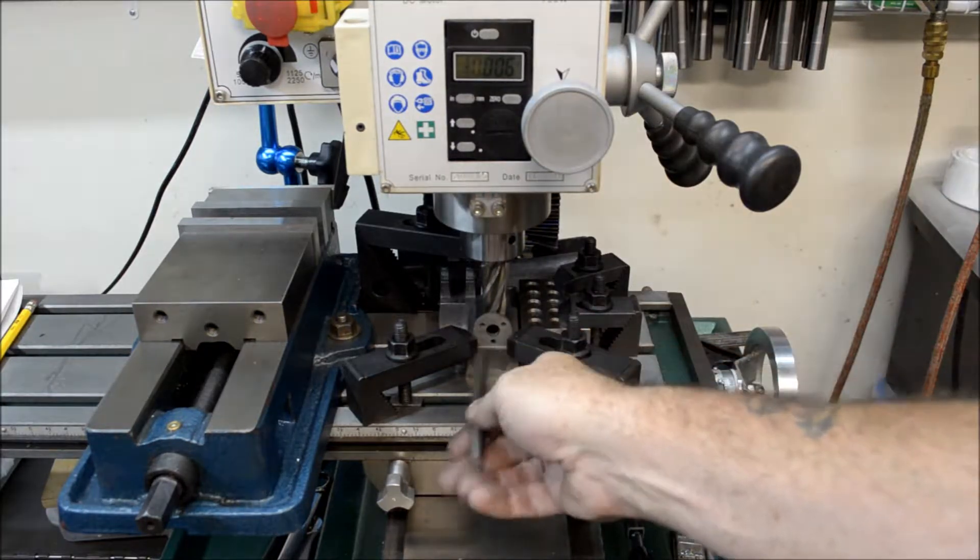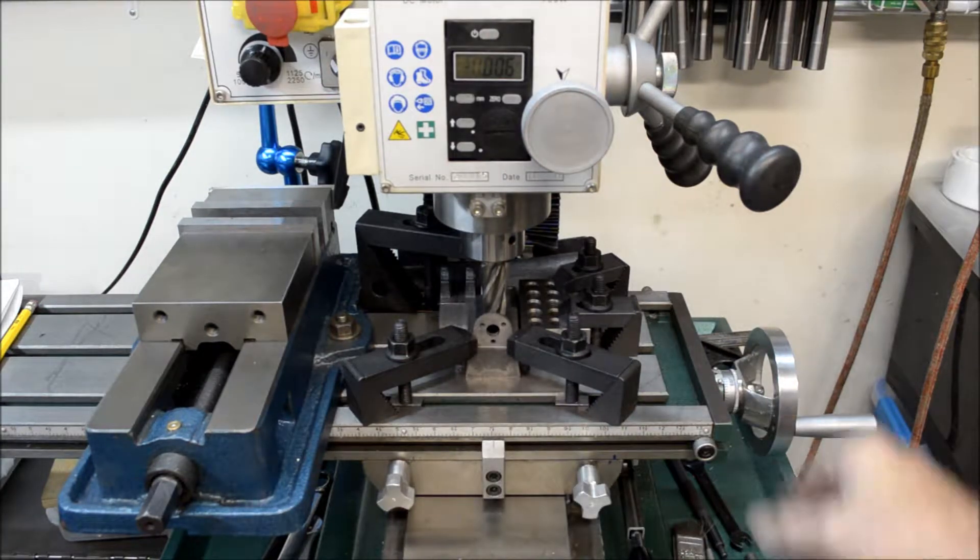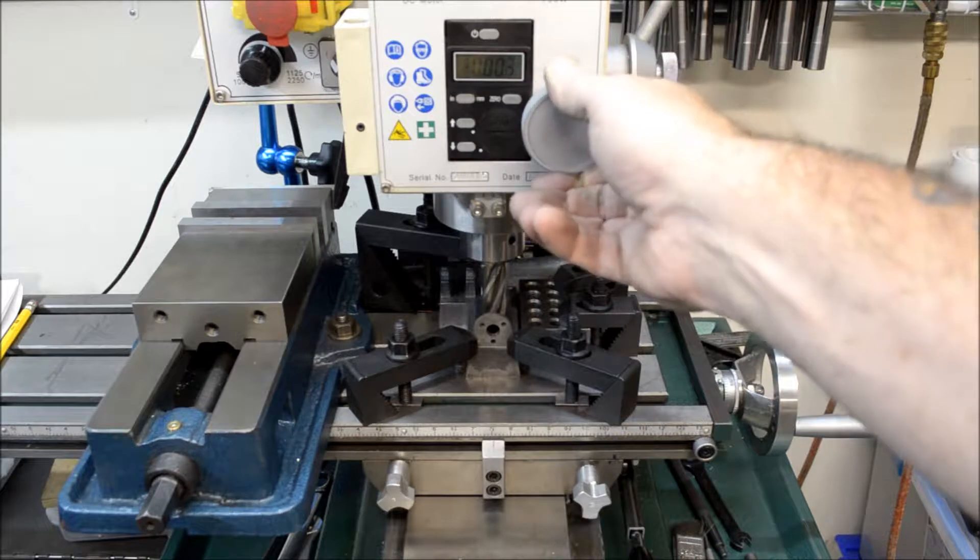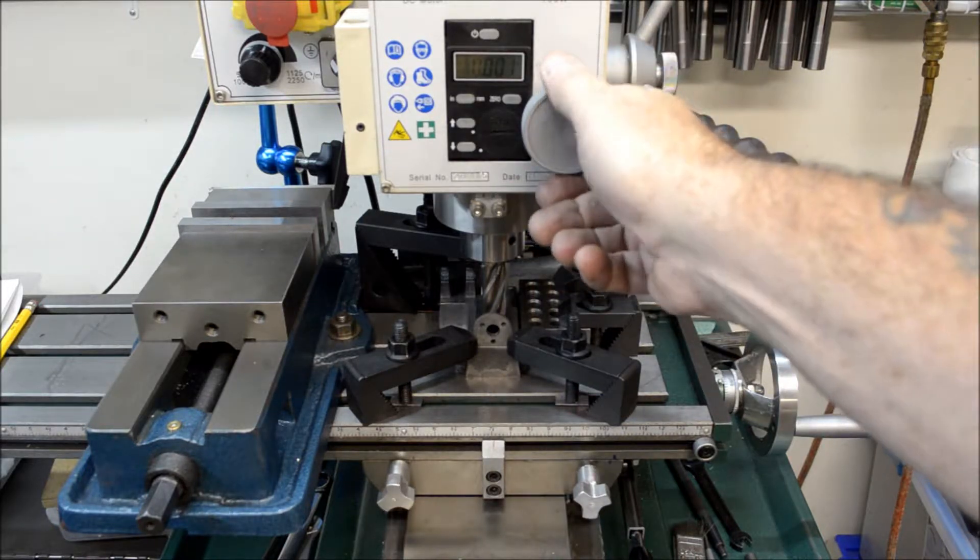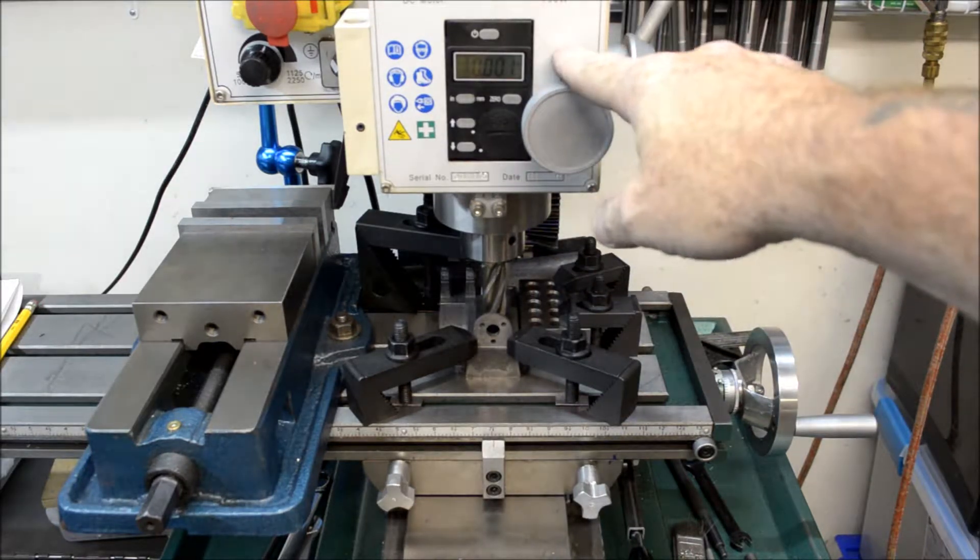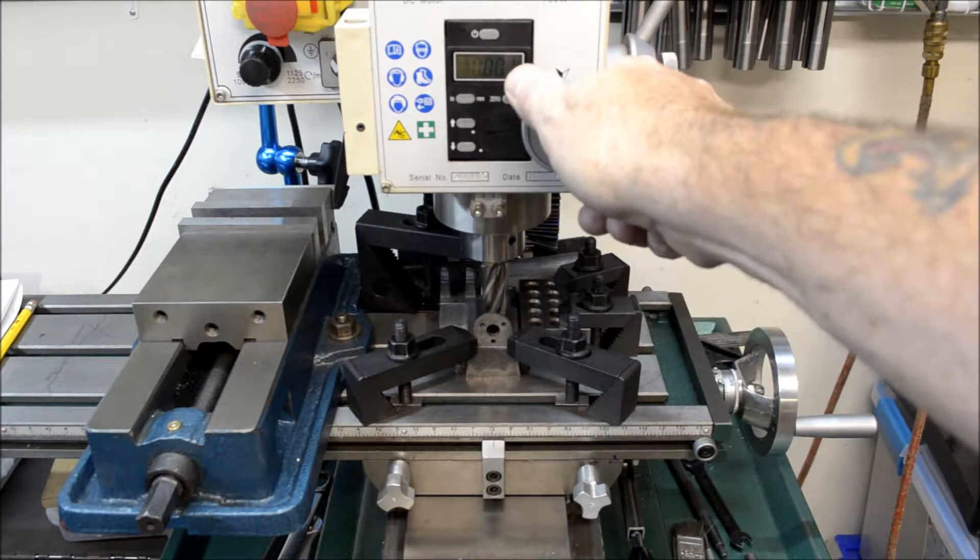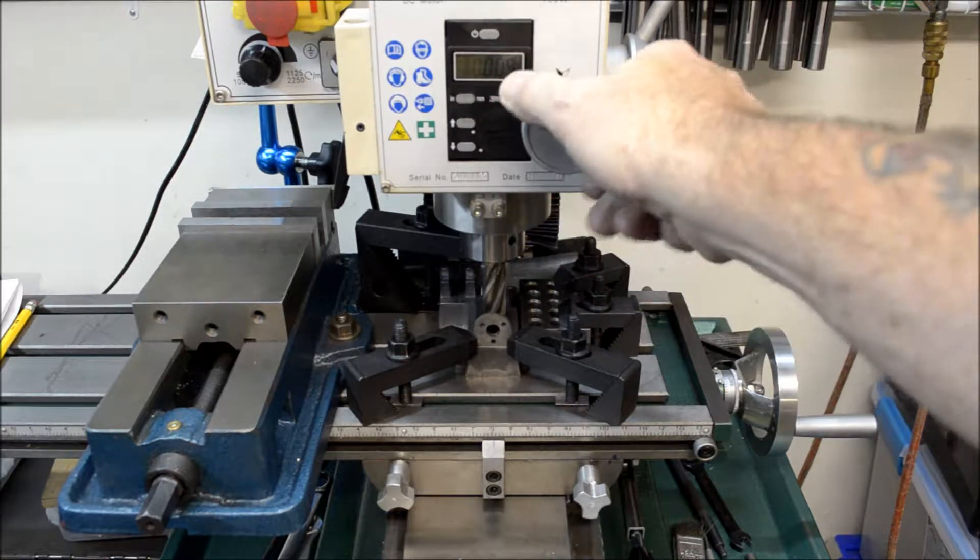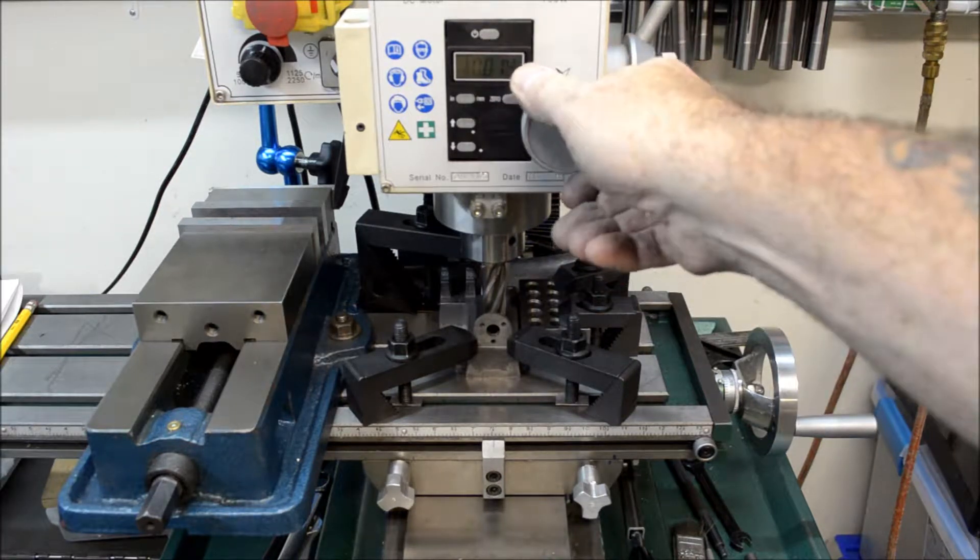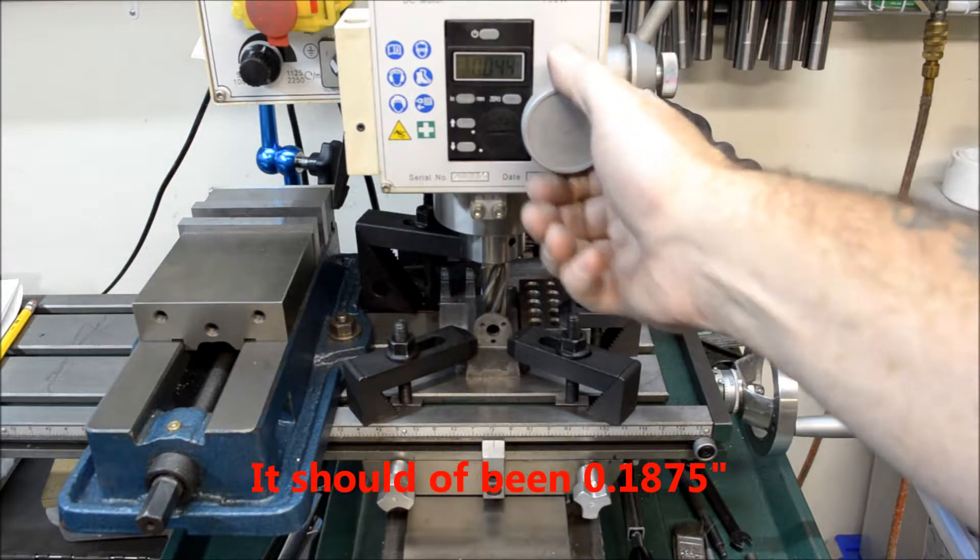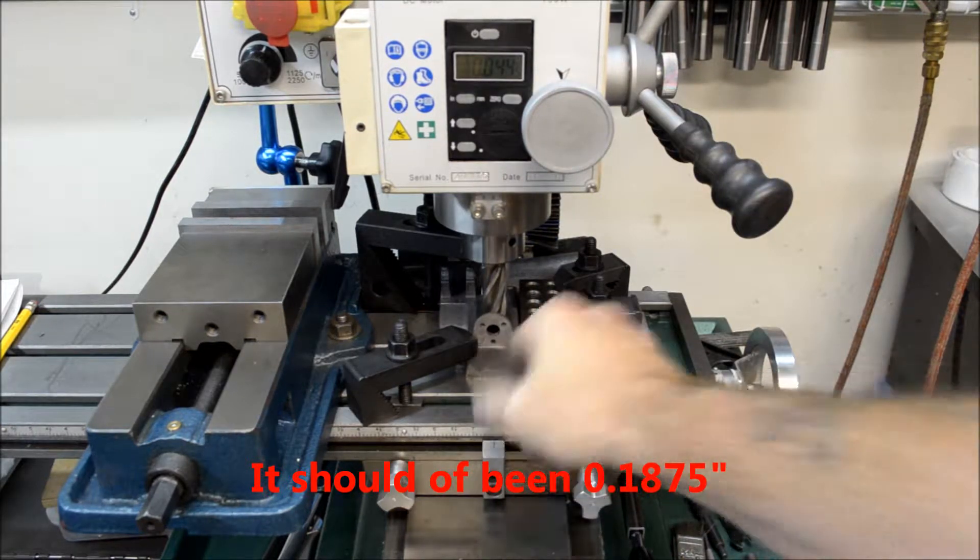Remove this piece of drill rod and go back to zero. And I'll go down half the diameter of that, which would be 185 and a half thousandths. And that should put the cutter on the centerline of this hole.